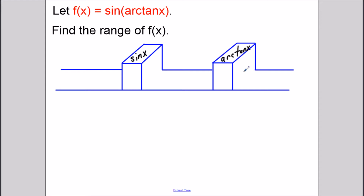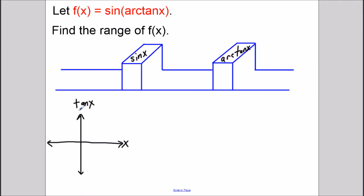The first thing we should find is the domain of arctangent x. If you do forget the domain and range of arctangent you can refer to a sketch of tangent x. For tangent x to have an inverse we need to restrict the domain of tangent from negative pi over 2 to pi over 2.